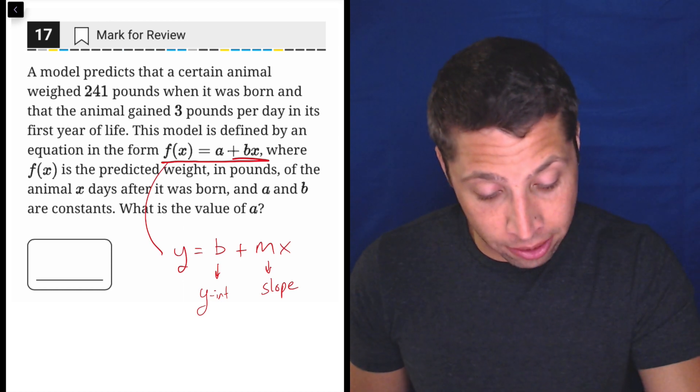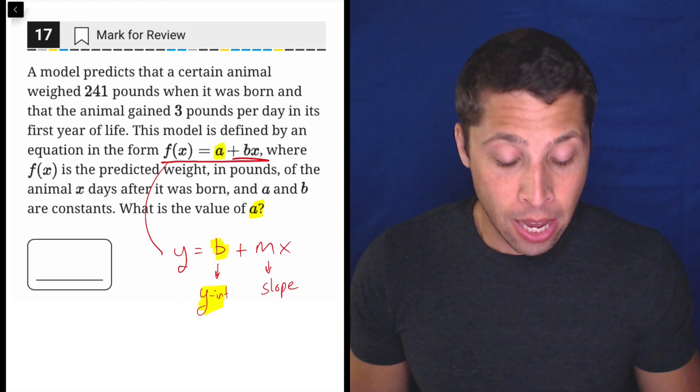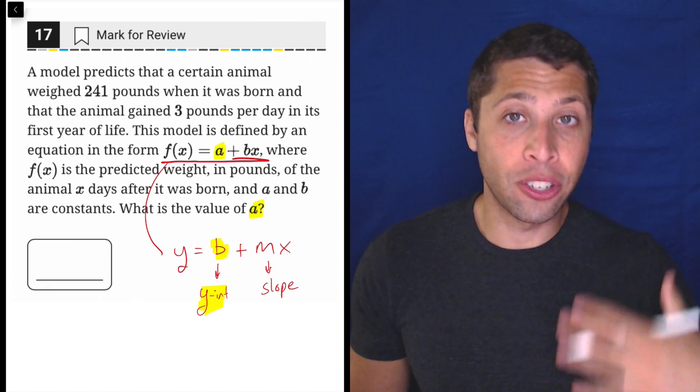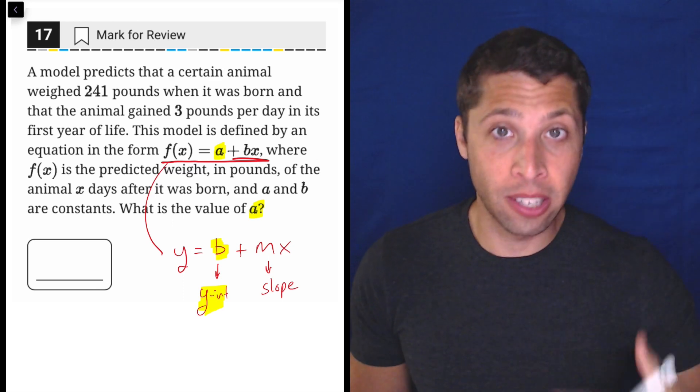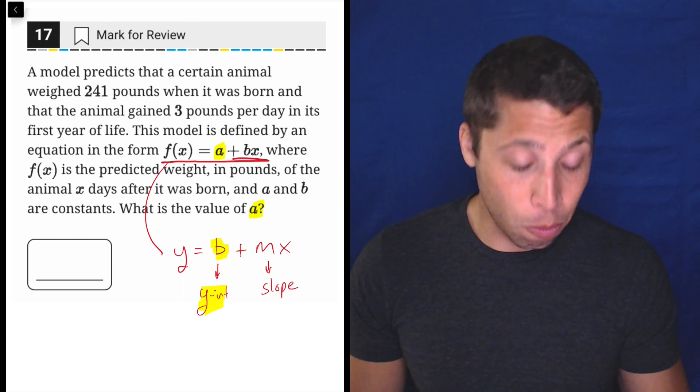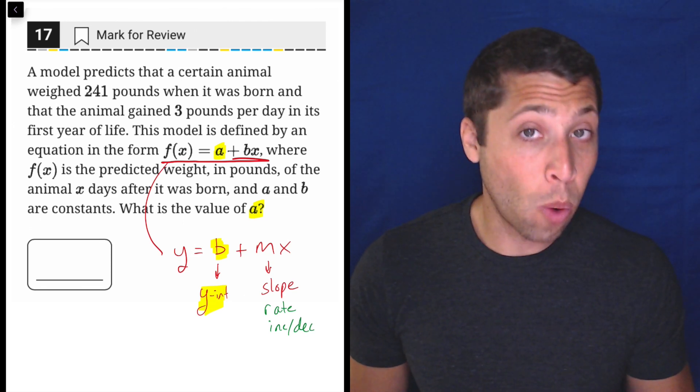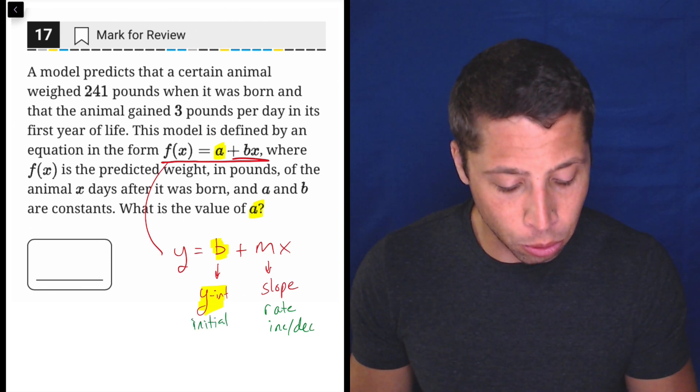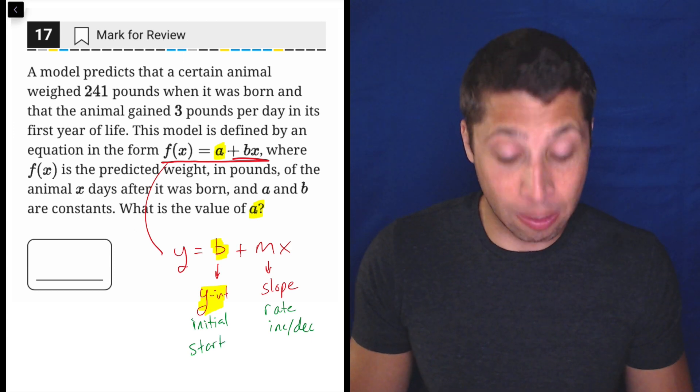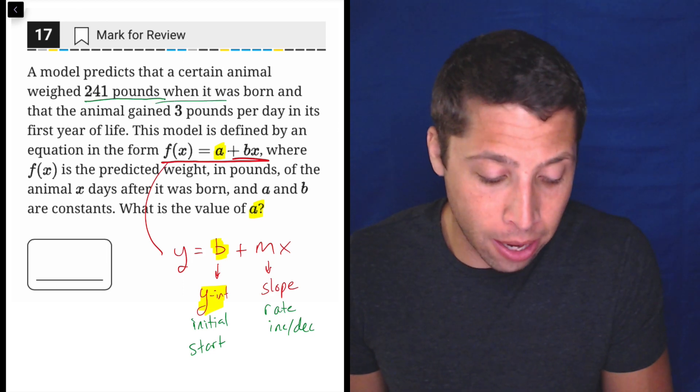So what they're really asking for, since they're asking for the a, is the y-intercept. Now, when we have a story, we don't say y-intercept, but we still use similar language. And this is the benefit of the stories is that since most of them are lines anyway, we're going to see the same words over and over again. And that's good for us. So a slope is going to sound like a rate, an increase or decrease, and a y-intercept is an initial value, a starting point. In this case, what is the animal's weight when it's born?